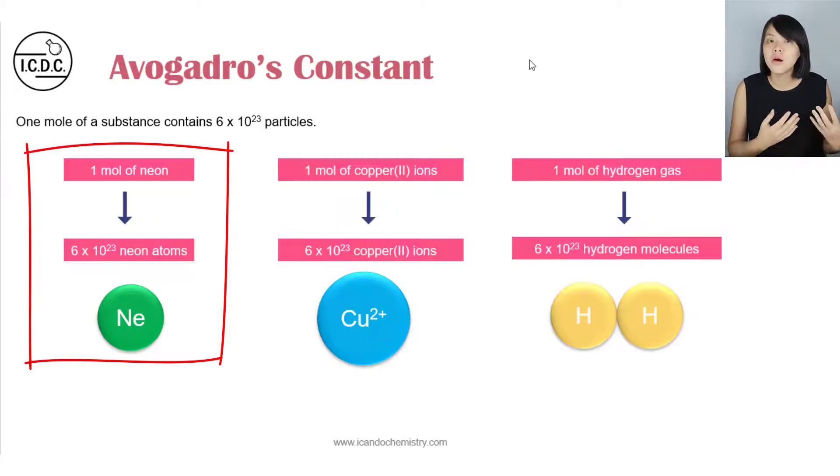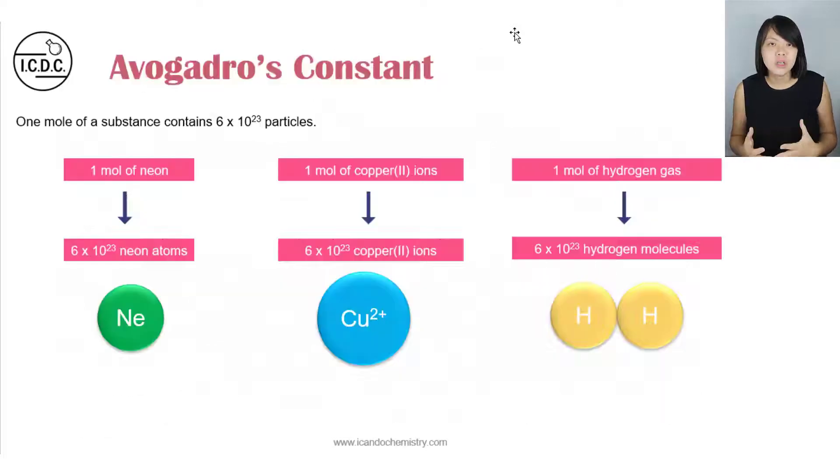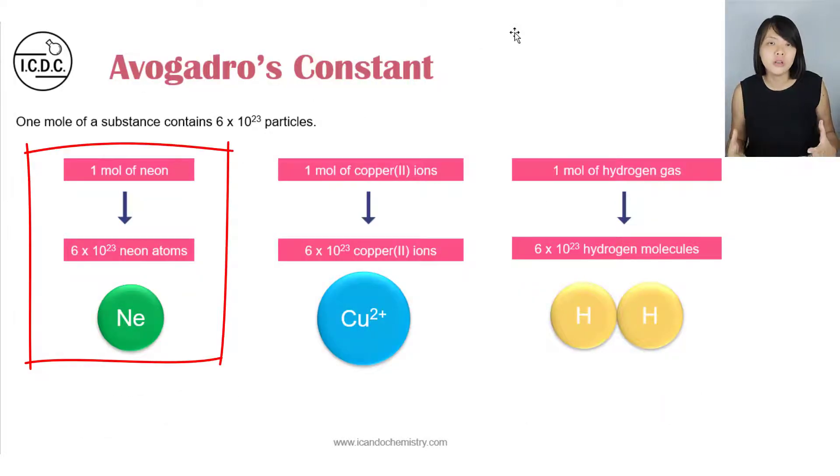So let's say we got one mole of neon. Neon is over here in group 0 of the periodic table. Now neon, we know that this is a very special non-metal that does not take part in any chemical reaction. So they exist as atoms. So when we talk about 1 mole of neon, we are actually referring to 6 times 10 power 23 neon atoms.